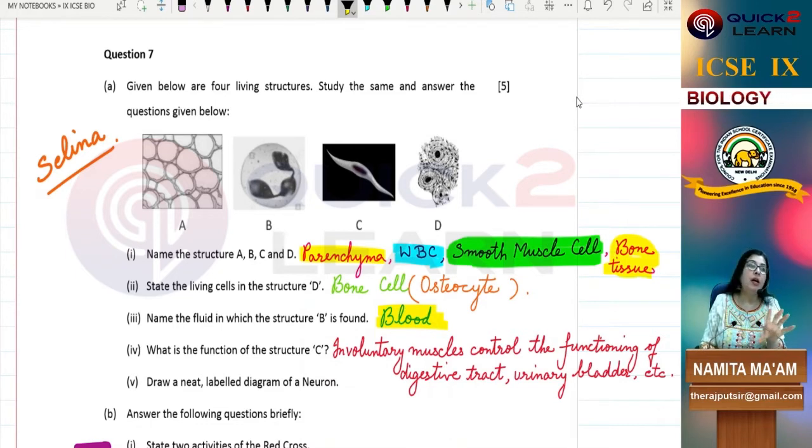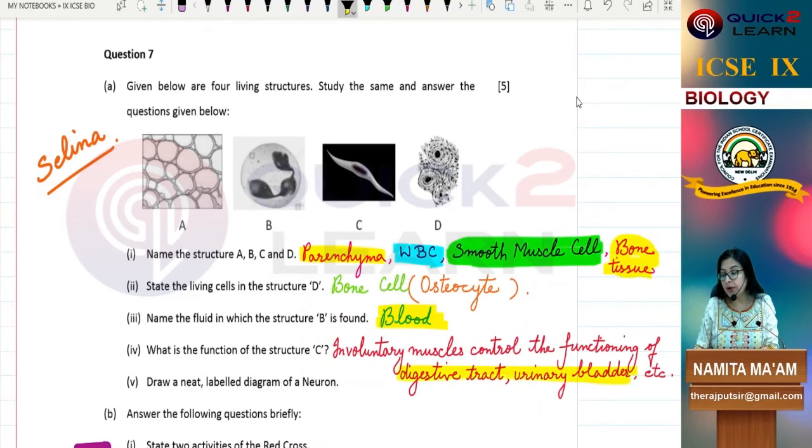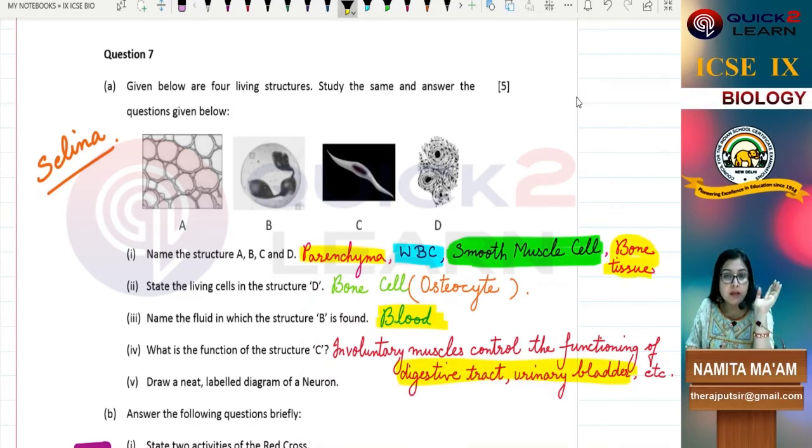These organs work automatically. Our vital organs will work without our conscious control. Such organs include the digestive tract, the urinary bladder, and the respiratory system. It is present in organs where your work and your life don't affect their functioning.